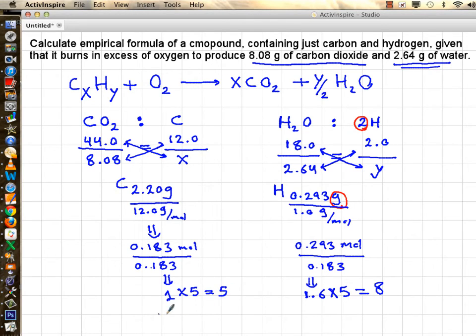Therefore your empirical formula is C5H8, which eventually in organic chemistry you learn this is an isomer of pentene.